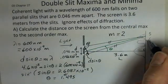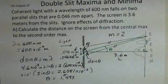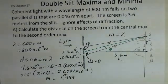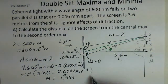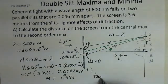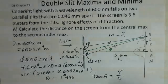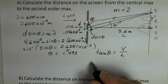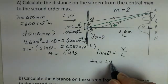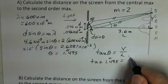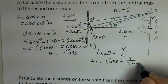Which trig function would you use? Well, we don't have knowledge of the length of the hypotenuse, so we'd use tangent. So tangent of theta is equal to this Y distance divided by L. And going ahead and putting in what we know. The angle is 1.495 degrees. We want to calculate Y. We know the screen is 3.6 meters away.